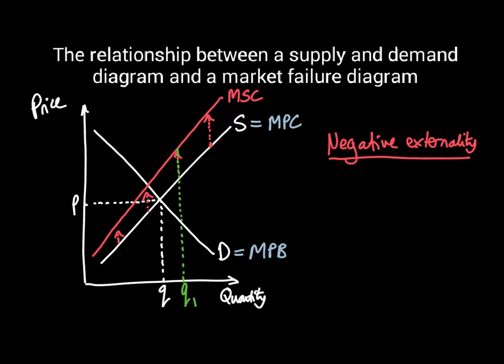We have essentially a few different bits. We've got from zero up to the supply curve - these are the private costs. The private costs are the costs between the horizontal axis and the supply curve, the ones that the firm is taking into account.